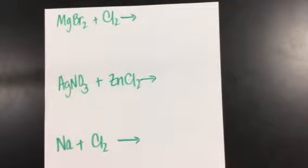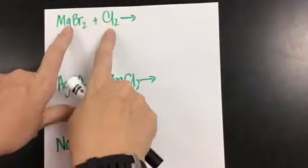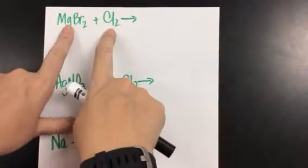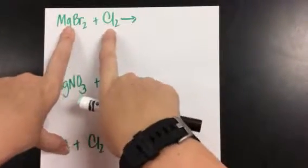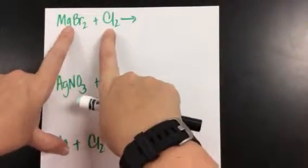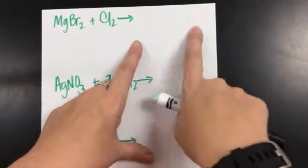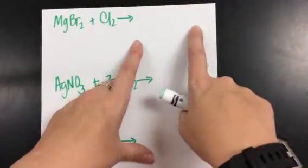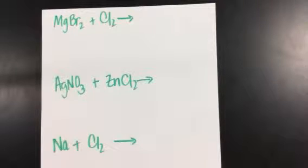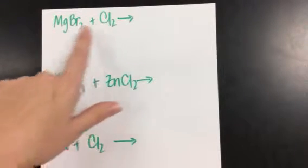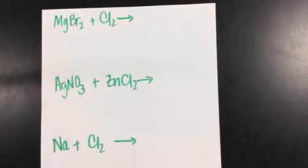Today we're going to talk about predicting products. What's going to happen in class is I'm going to give you your reactants. Based upon what type of chemical reaction you have, you're going to be able to predict what you make as a product. In order to predict what you make, you look to see what type of reaction you have.